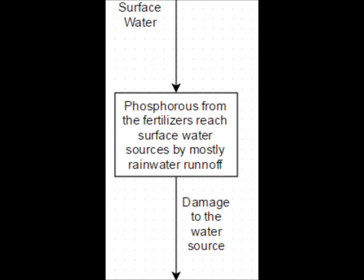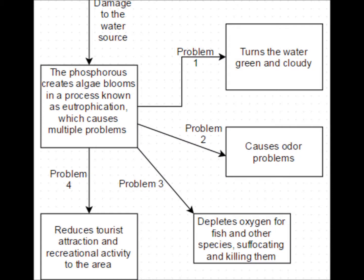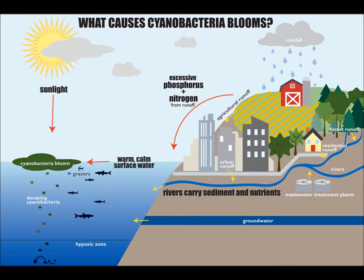And why is this pollution so bad? Well, aside from the obvious reason of it being poisonous, there are a few other problems as well. These other problems revolve around a single process known as eutrophication, which is when the phosphorus from the chemicals creates algae blooms in the water source. This leads to four main problems: one, it turns the water green and cloudy; two, it causes odor problems; three, it depletes oxygen for fish and other nearby species, suffocating and killing them; and four, it reduces tourist and recreational activity in the area. This graphic clearly depicts this entire process.